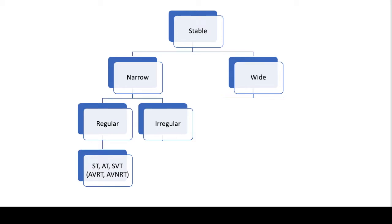Next we're going to talk about SVTs. SVTs are where people get a lot of anxiety and headaches because you have AVNRT and AVRT. When we start to talk about physiology, you start thinking about the slow-fast pathways and the accessory pathways, and it could all get jumbled really quickly. However, what's nice is when it comes to the clinical side of things, it doesn't really matter which one's AVNRT and which one's AVRT — you just have to recognize that this is an SVT.